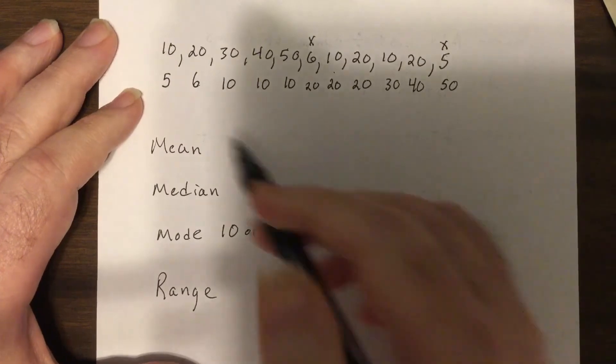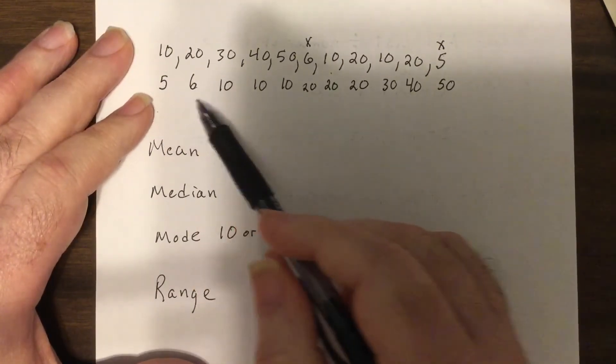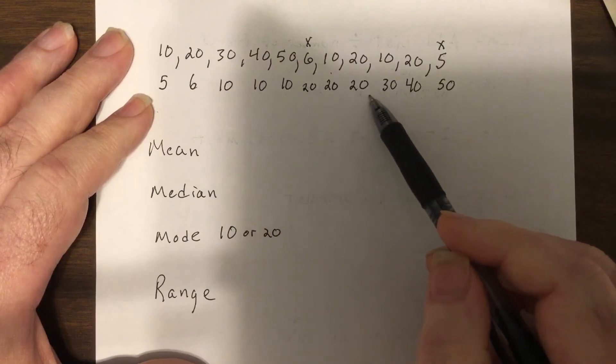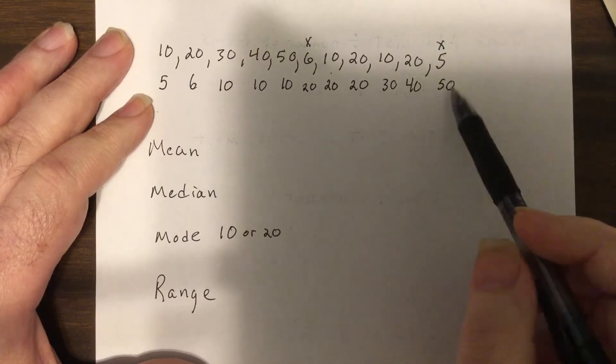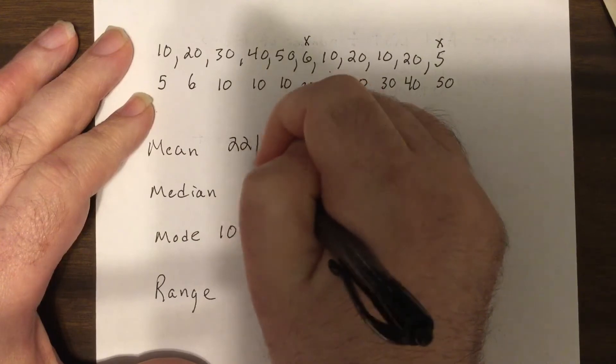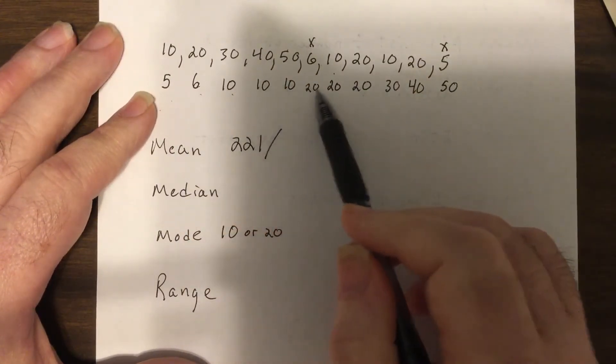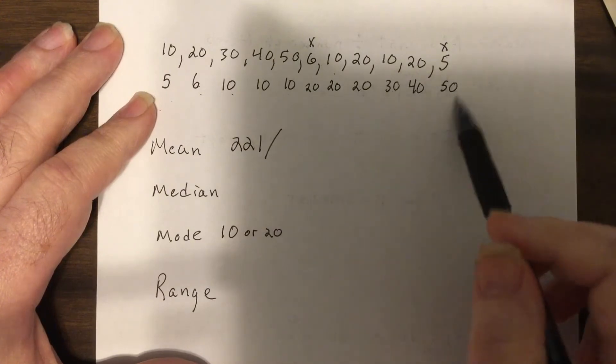Yes. Now the mean, we got to add these up. That's 11, that'd be 41, 101, 171, 221, divided by uno, dos, tres, 4, 5, 6, 7, 8, 9, 10, 11.